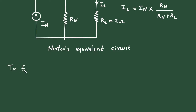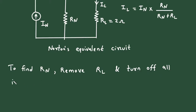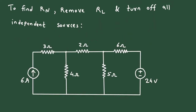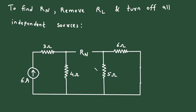To find Rn, remove Rl and turn off all independent sources. Here we can see, in this circuit, when we remove Rl, this will be Norton's resistance Rn. Also, we have to turn off all the independent sources. This is a voltage source, so when we turn off a voltage source, it will be short-circuited. And when we turn off a current source, it will be open-circuited.